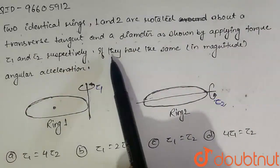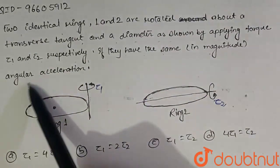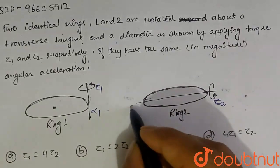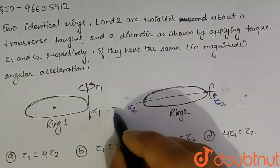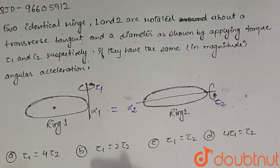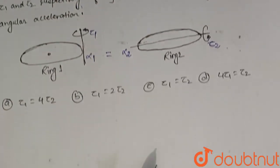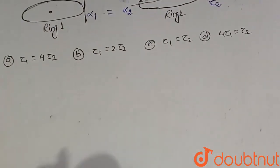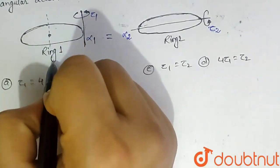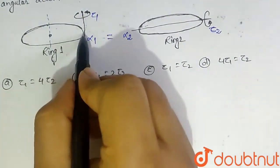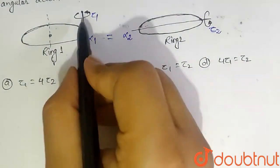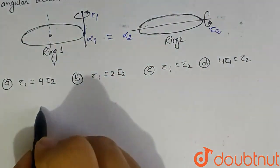If they have the same angular acceleration, that means alpha1 equals alpha2. We will find the tau1 and tau2 relation. For the transverse axis, for the ring about this axis, we will use the parallel axis theorem. Then we get I1.